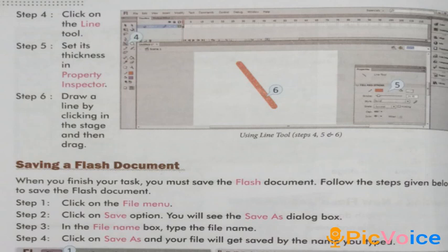Page 102. Step 4, click on the line tool. Step 5, set its thickness in the Property Inspector. Step 6, draw a line by clicking on the stage and then dragging.